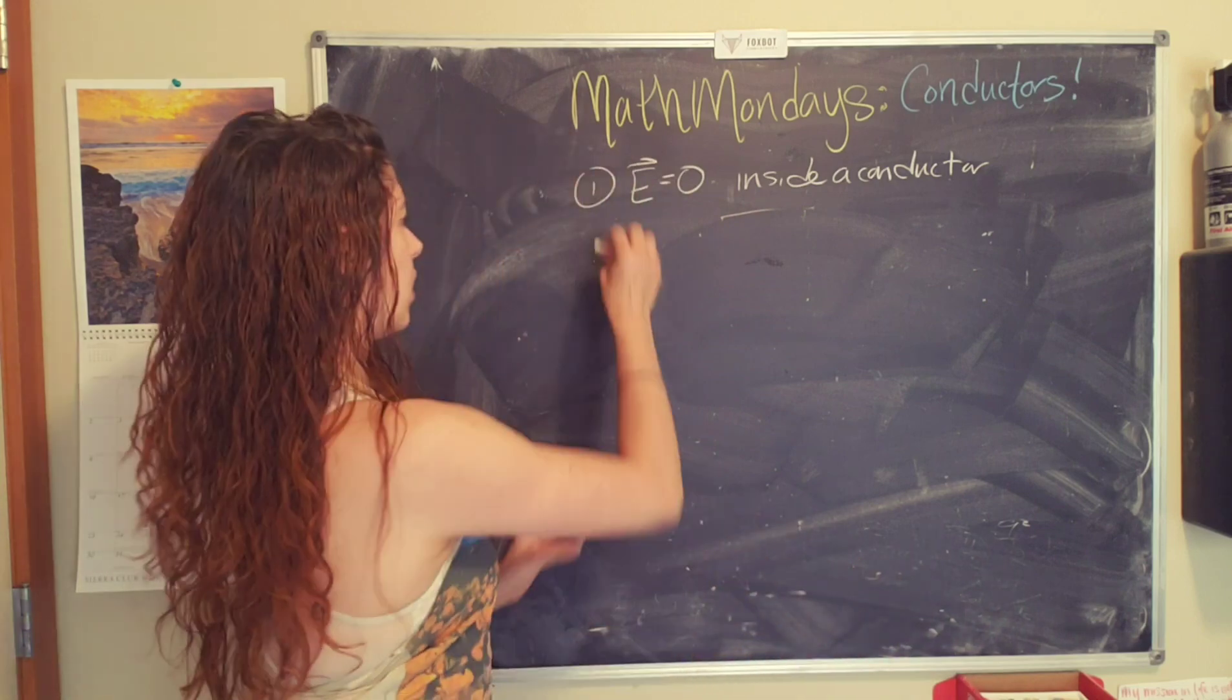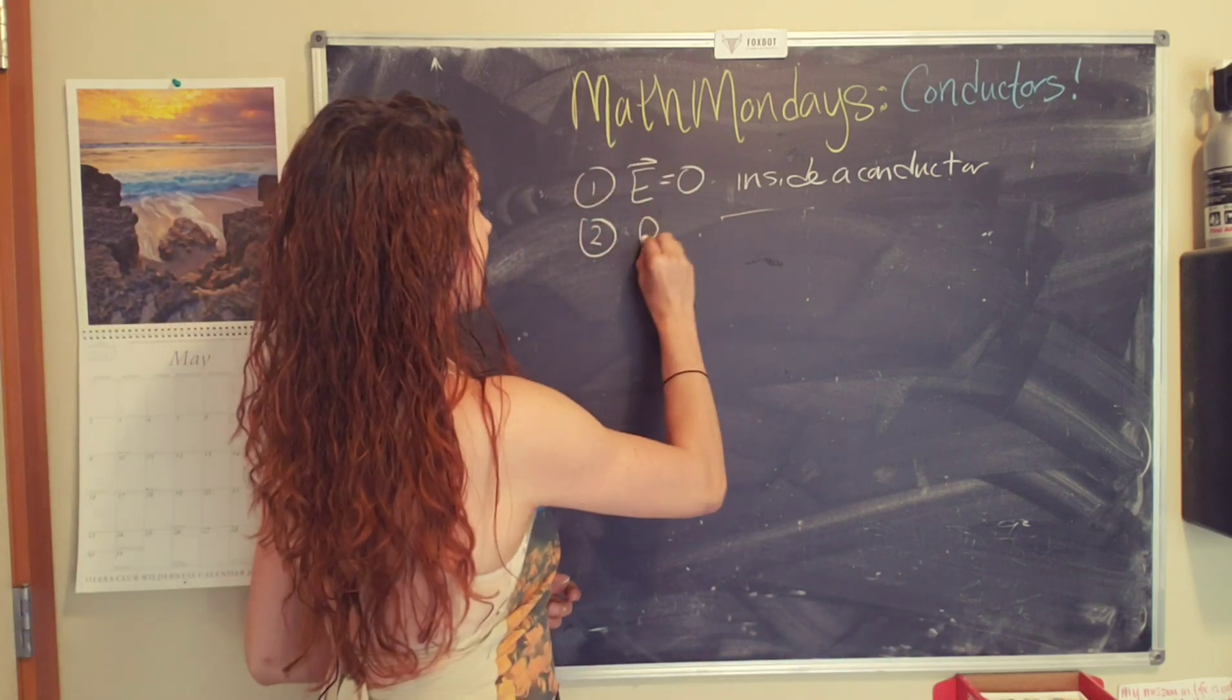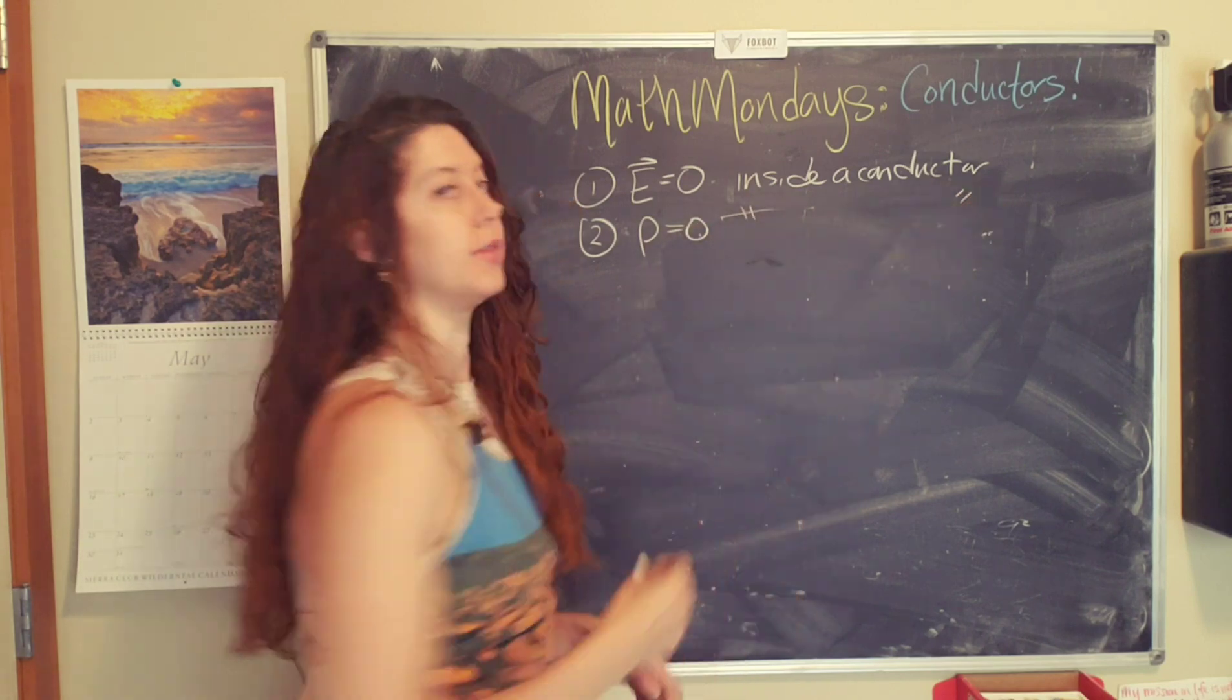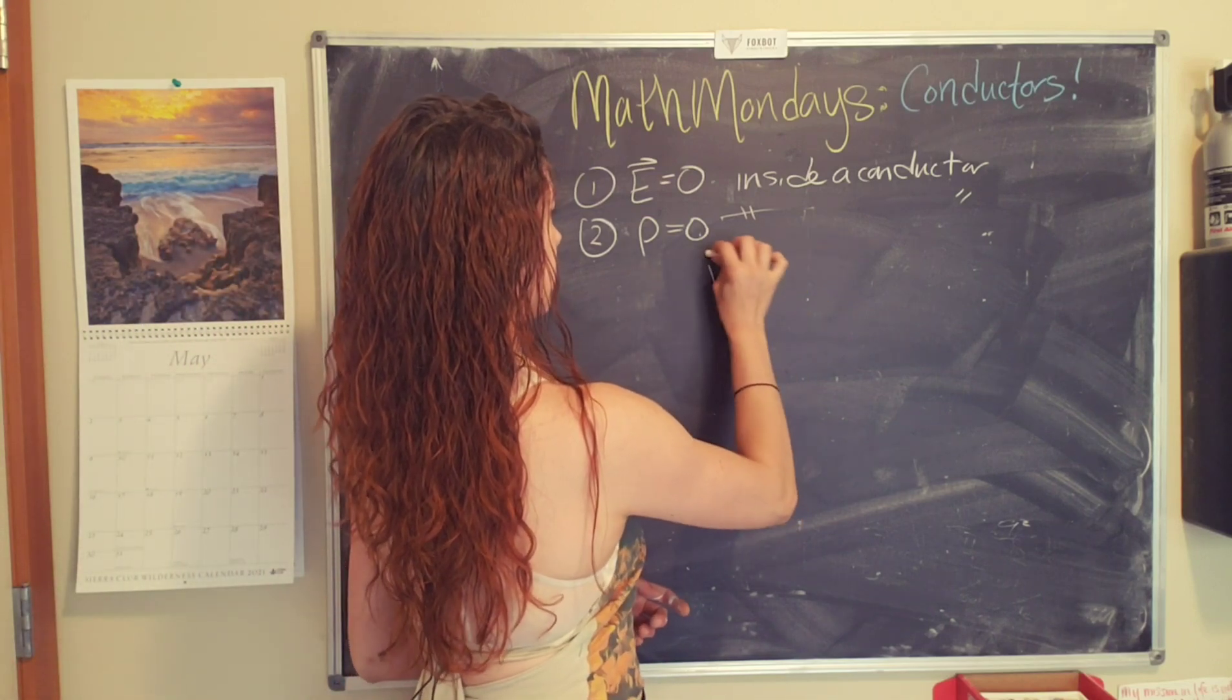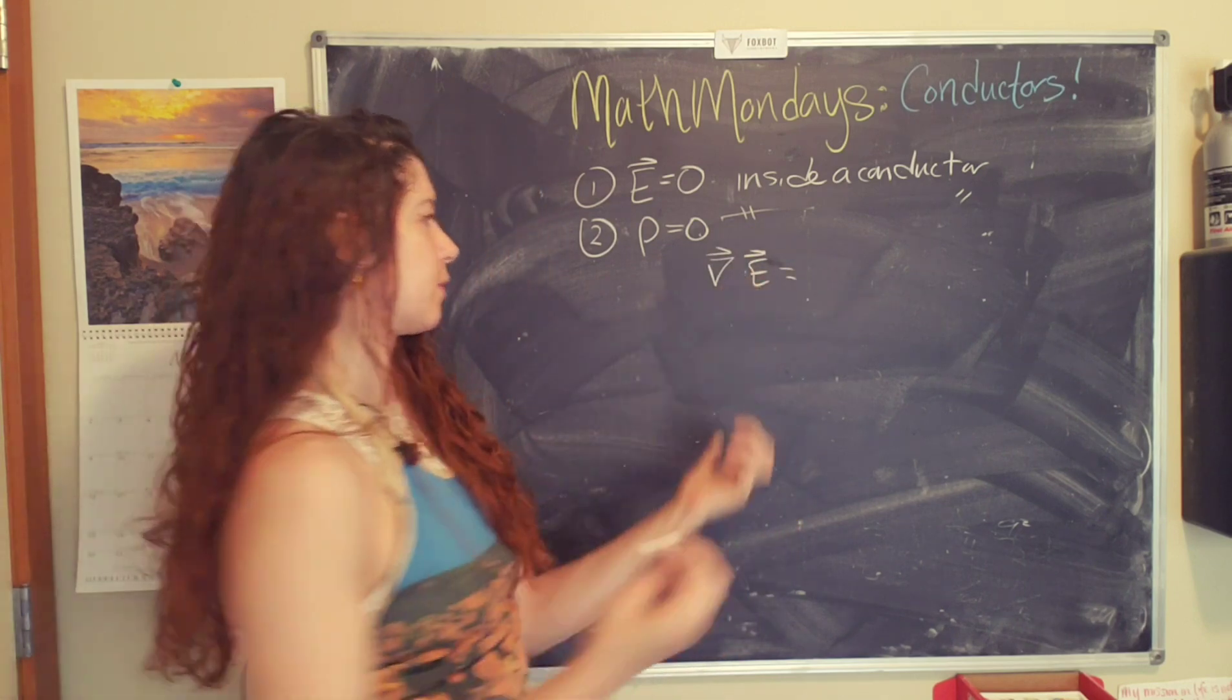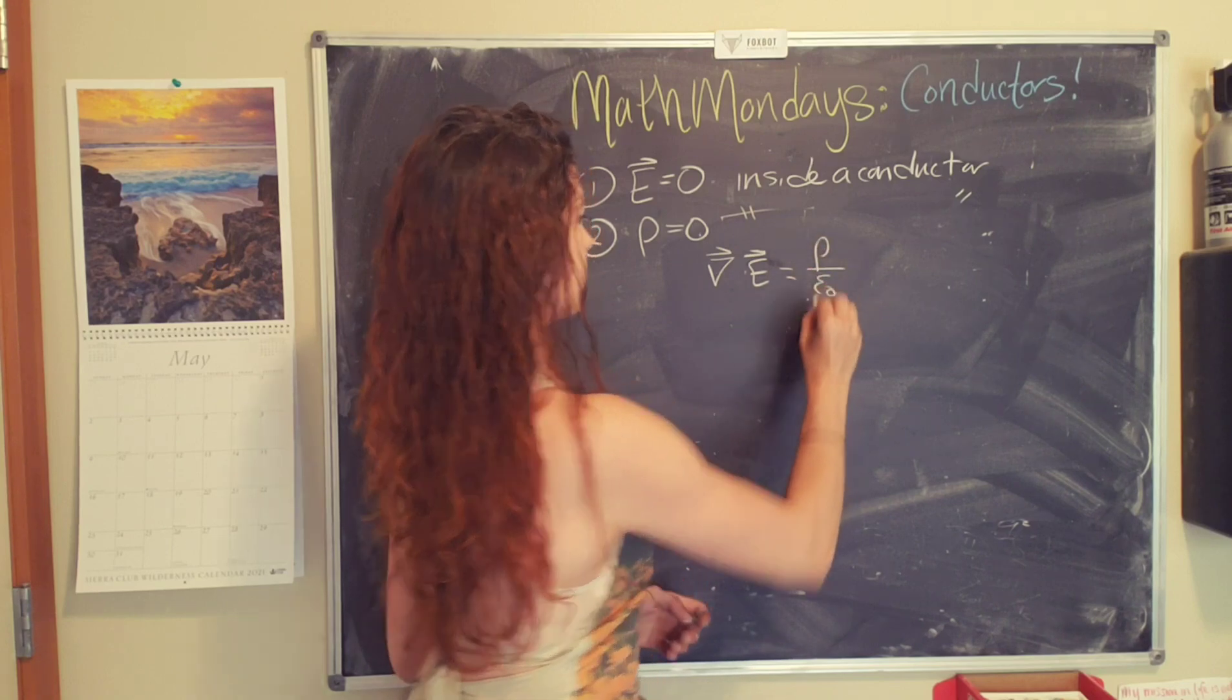And what ends up happening as a result of this is that the net charge density is zero inside the conductor. Okay. Let's actually prove this because that is a bold statement to make. So from Gauss's law, we know that the divergence of E is equal to the charge density over epsilon naught.